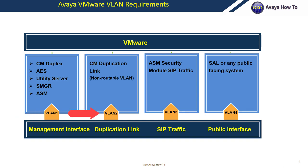You will need a non-routable VLAN for your CM duplication link. CM uses this link to monitor its heartbeat and to keep its database sync between the active and standby server. The third VLAN is for your session manager security module SIP traffic — Avaya recommends separating management traffic from SIP traffic. The final VLAN is your public facing interface VLAN for your SAO or any other public facing system.